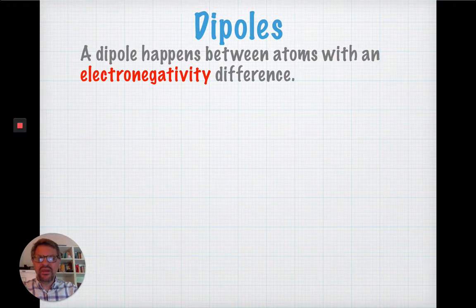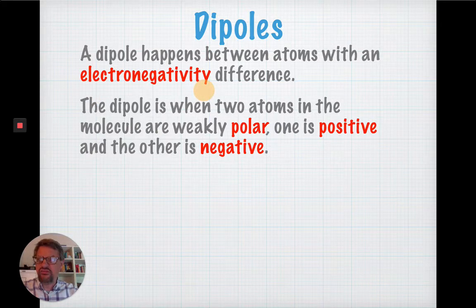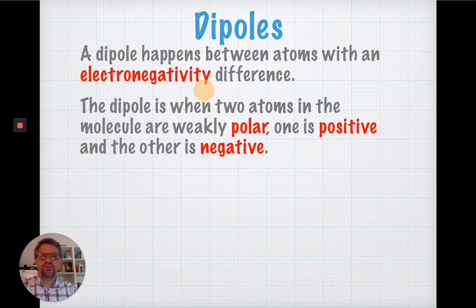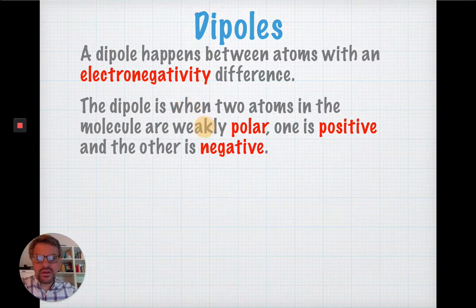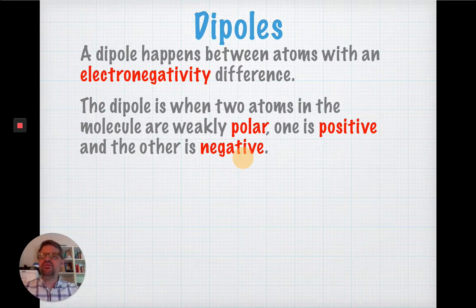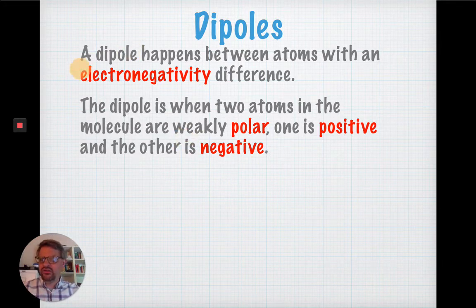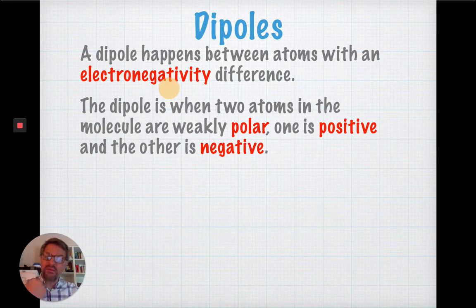A dipole is when you have two atoms with a big enough difference in electronegativity, the attraction for the electrons that one atom is sharing with another. So, when you have a large enough difference in electronegativity, what happens is that the bond is polar. One of the atoms becomes positive and the other is negative. And the reason that happens, the negative atom with a higher electronegativity ends up hogging the electrons. It's like, I want them. I'm getting them.